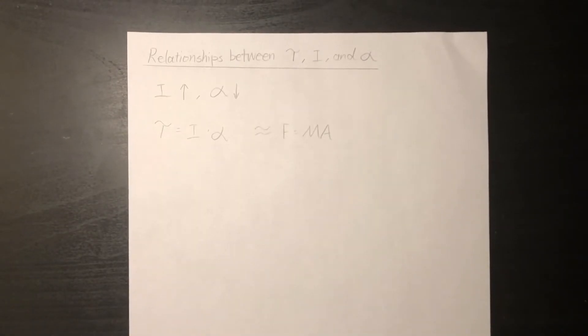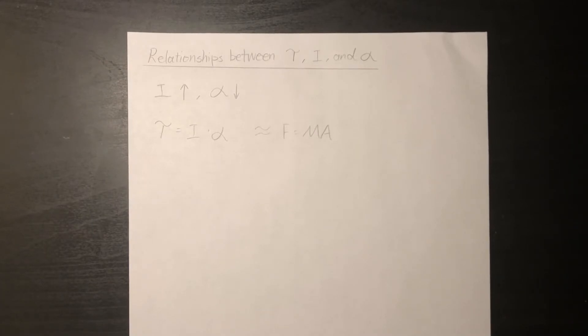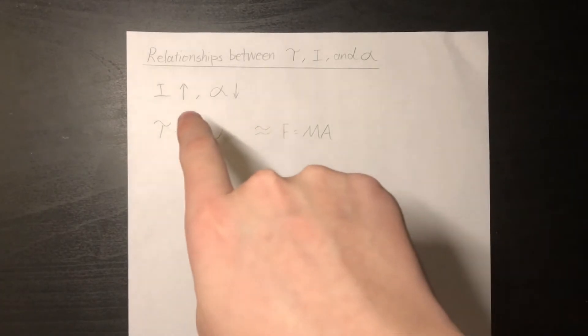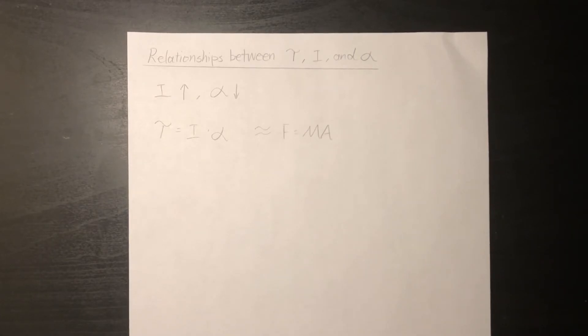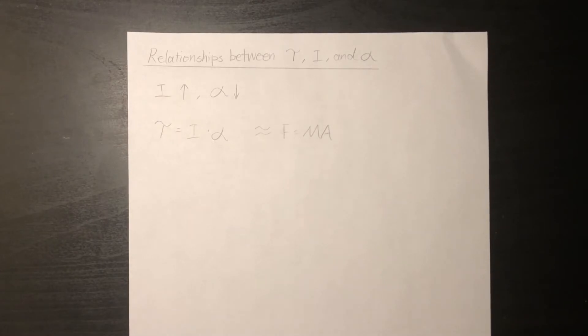Connecting what we learned about torque, angular acceleration, and moment of inertia: when the moment of inertia is high, the angular acceleration will be smaller when we apply a constant torque. We can express this as torque equals I times alpha. Notice this is similar to F equals ma — in fact, the formula for torque is another version of F equals ma, but in the world of rotation. The trick to remember torque equals I alpha is that it mirrors F equals ma.